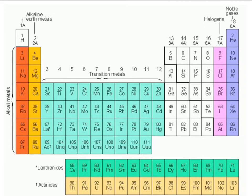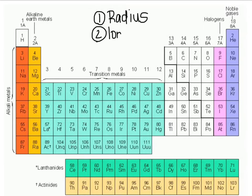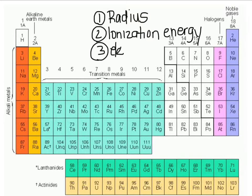We're going to go over the basic periodic trends based on the organization of the table. There are three basic trends: first, atomic radius — what happens to the size of an atom as you go across and as you go down. Second, ionization energy — what happens to the energy needed to pull an electron off. And third, electronegativity — how much an atom wants to pull electrons towards it.